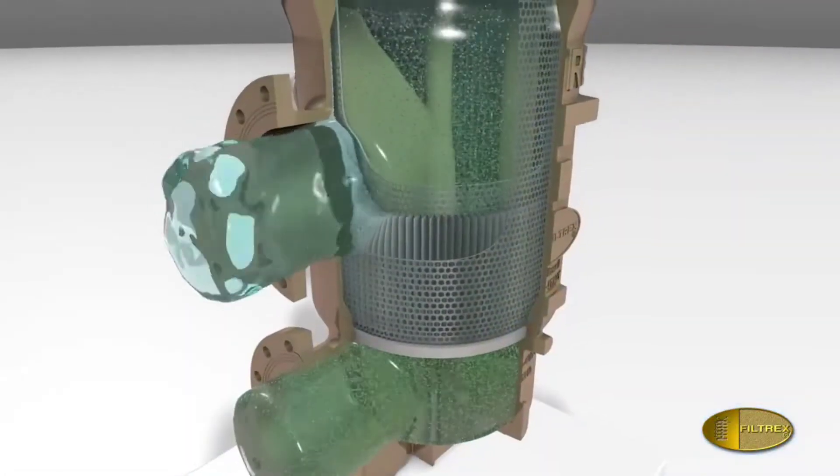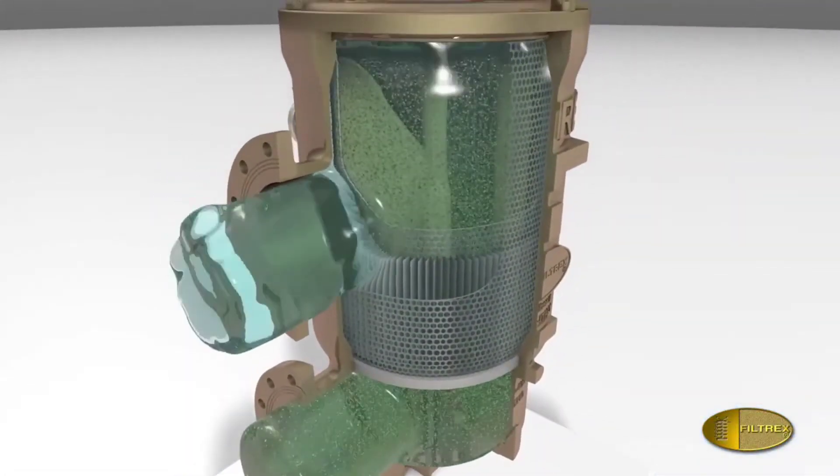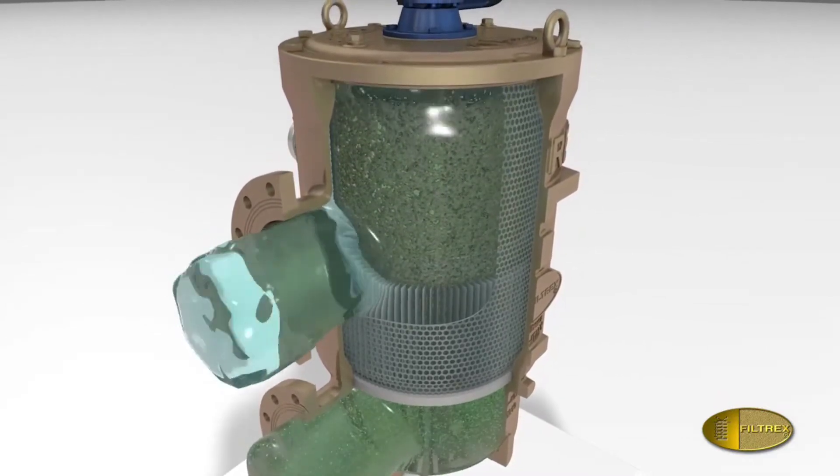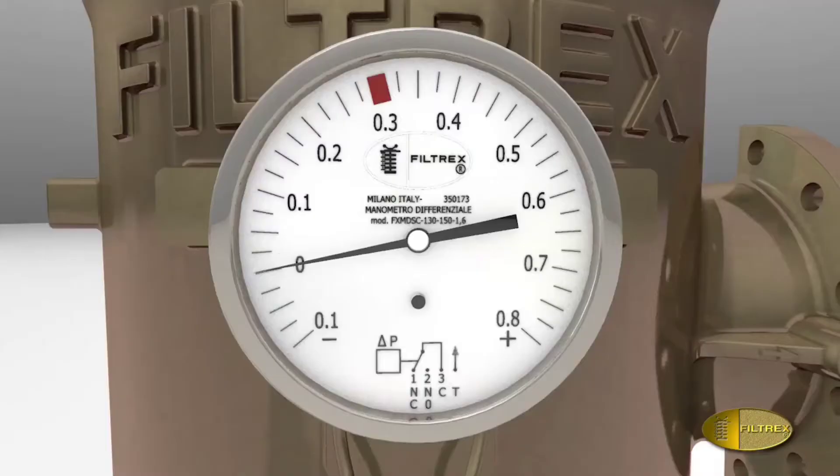As more and more impurities build up in the filtering element, the differential pressure gradually increases, as shown by the indicator, until the programmed set point is reached.